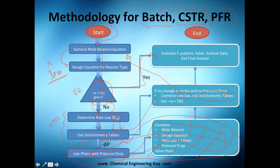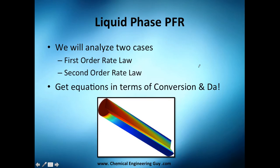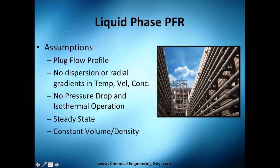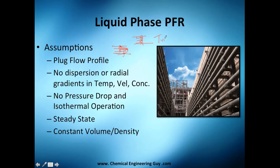Once we combine those, we evaluate and solve for the problem, then analyze and get the final answer. For the liquid phase PFR, we'll analyze two cases: first order and second order. We need to get the equations in terms of conversion and if possible the Damköhler number. The key assumption of the liquid phase PFR is the plug flow profile — instead of the typical parabolic velocity profile, we have an almost uniform flat profile across the cross-section. This is possible when the flow is highly turbulent.